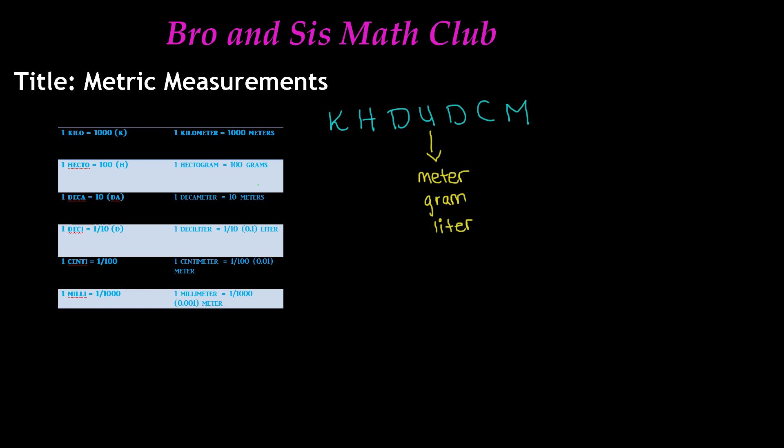The K stands for kilo. In my chart, you can see that kilo equals 1,000, and the symbol is K. To the right of my chart are examples, and to the left are what they mean and their symbols. So one kilometer equals 1,000 meters.